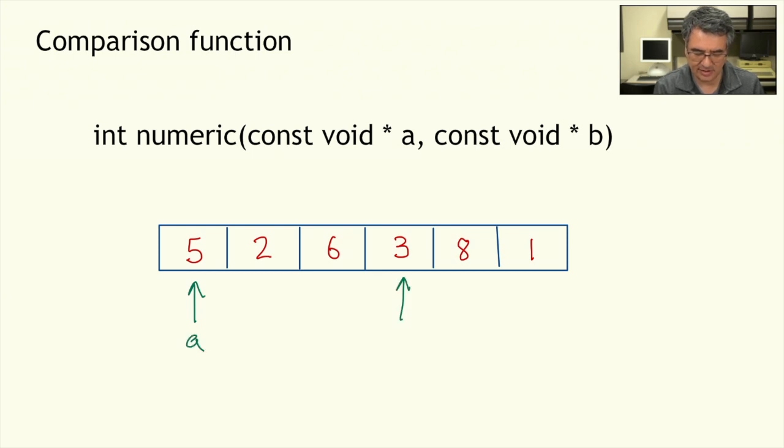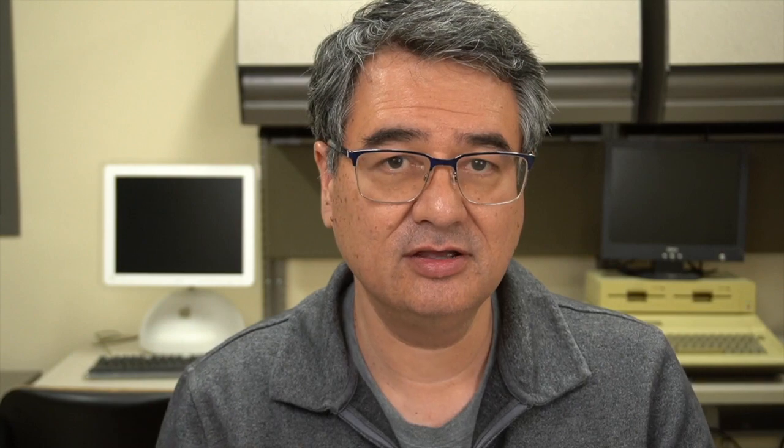A and B are pointers to two elements of the array — one we'll call A, the other one we'll call B. They're coming into our function as void pointers, pointers to something. But we know this is actually an array of integers, so the first thing our function needs to do is cast these variables to be integer pointers, because that's what they're actually pointing to. In order to compare A and B, we need to compare them as integers. The comparison function needs to return 0 if the two values are equal, a positive number if A is greater than B, and a negative number if B is greater than A.